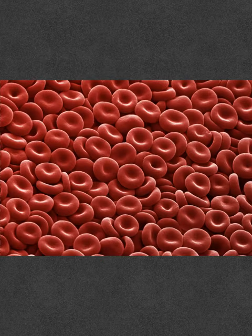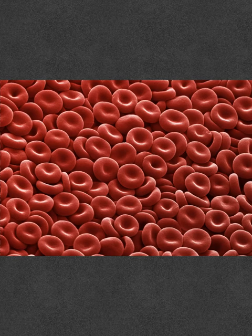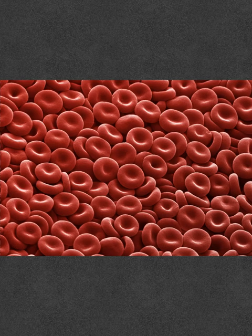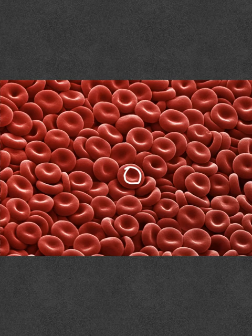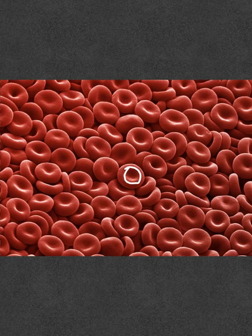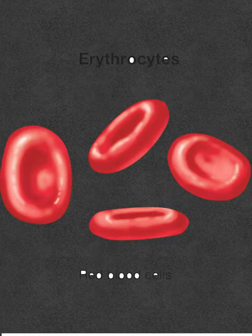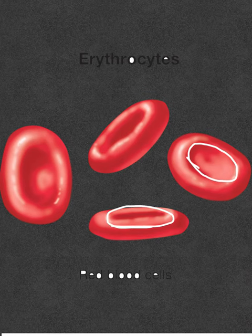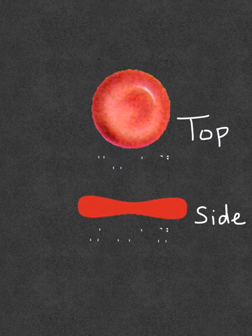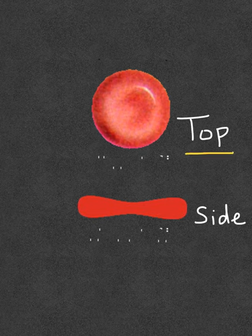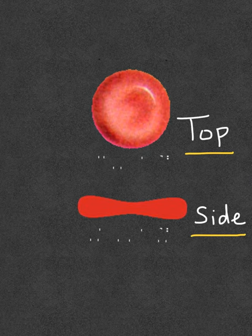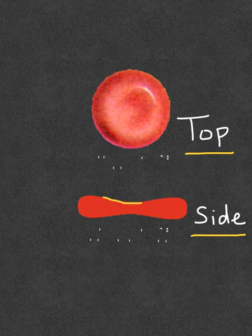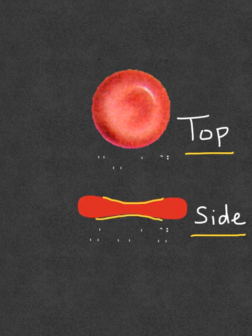This image shows multiple RBCs and you can clearly see the concavity towards the center of the RBCs. And this concavity is seen on both sides of the RBC - it is biconcave. This is another image showing how the RBCs are concave on both sides. This is the top view of an RBC and this is the side view. On the side view you can clearly notice the biconcave shape showing the concavity on both sides of the RBC.